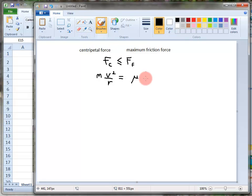We can also write instead of that M G. M is the mass of the car and G is the acceleration due to gravity. There are two M's here, we cancel them out.